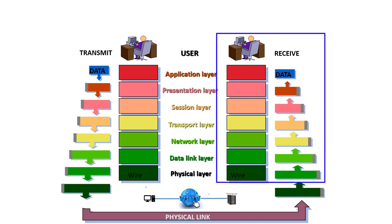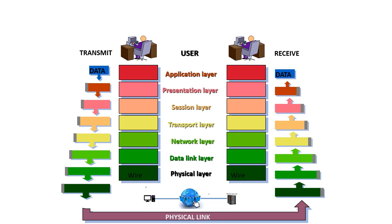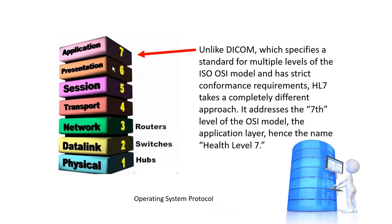When the data is received at the other end of the physical link, it goes just the reverse. We start at the data link layer, go to the network layer, transport layer, session layer, presentation layer, and the application layer, which is what we look at on our monitor.